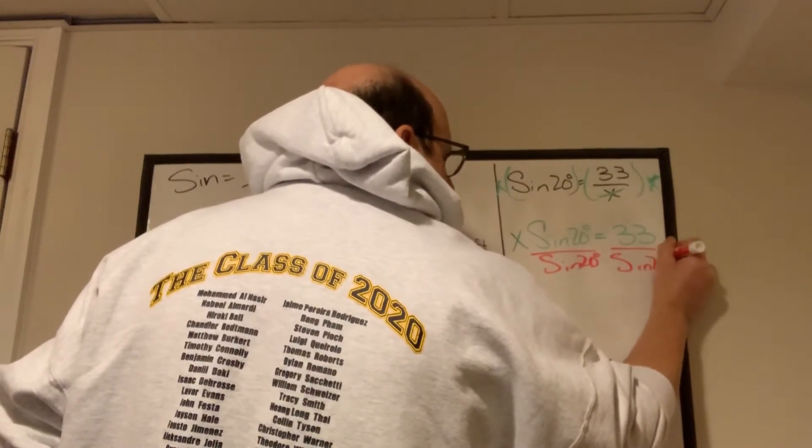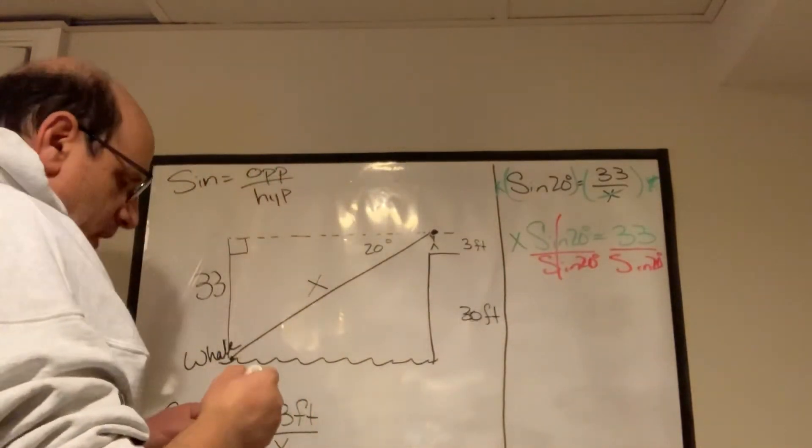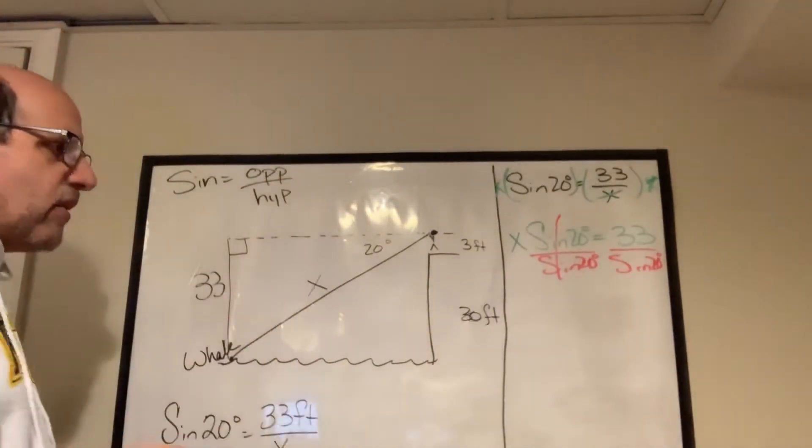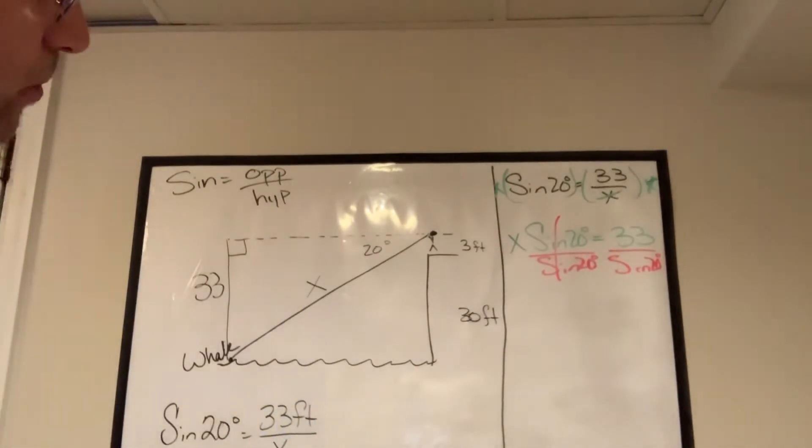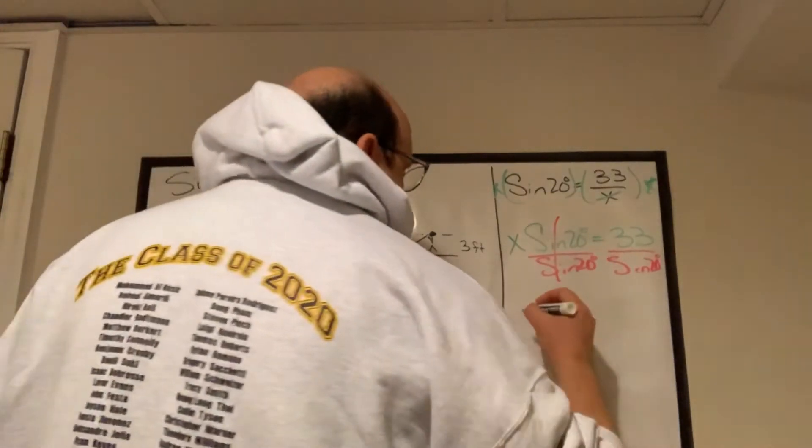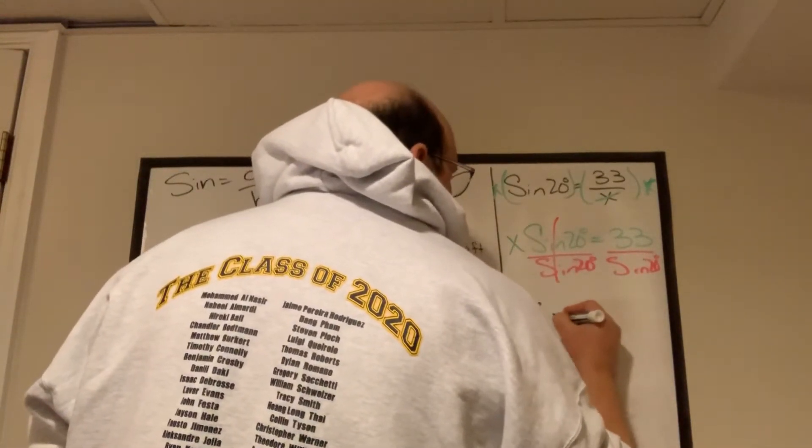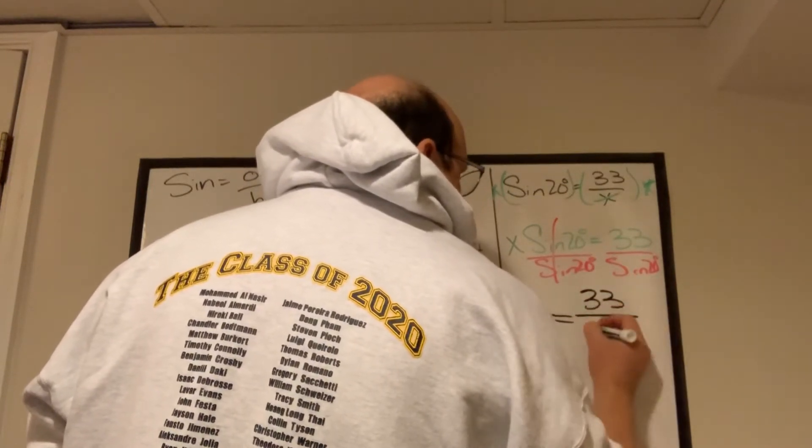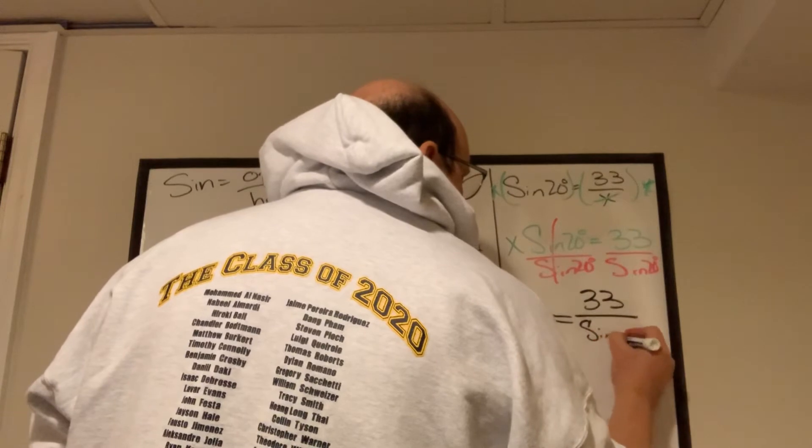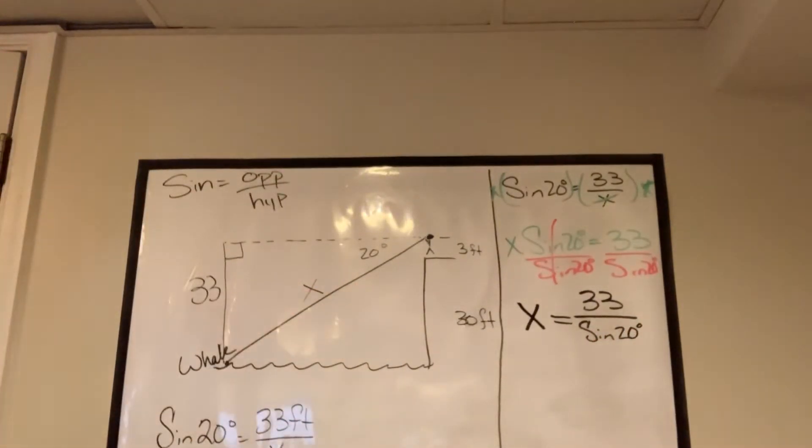That's using algebra to our advantage. And now this turns into a big fat 1, and any variable times 1 is just that variable itself. So I can rewrite this as X equals 33 over the sine of 20. And that's basically what it is.